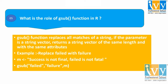Let us consider a sentence stored in variable m: m = 'Success is not final. Failed is not fatal.' Now we will replace the word 'failed' with the word 'failure' using the gsub function. We specify the word to replace ('failed'), the substitute word ('failure'), and m where the sentence is stored. As a result, the output will have 'failed' replaced by 'failure'.